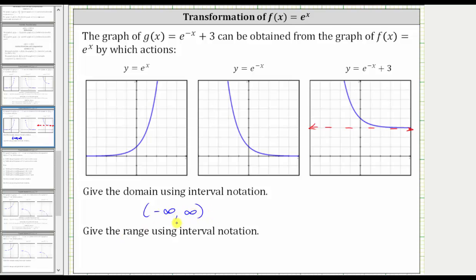And now the range is the set of all possible outputs or y values. Notice how the y values or function values approach three but never reach three. Then they go up indefinitely and approach infinity. And therefore the range is y or f(x) is greater than three. Using interval notation, we have the open interval from three to infinity. And again, we use a parenthesis here, not a bracket because three is not included in the range. I hope you found this helpful.